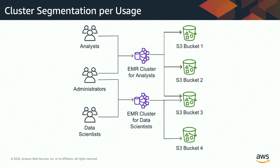Looking at the diagram on the left, there are different types of users — analysts, administrators, and data scientists — all using S3 for their data. In the middle, there are two different clusters meant for two different use cases: the first one mainly for analysts and the second for data scientists. You can have different configurations for each cluster, while admins can still maintain the entire environment.